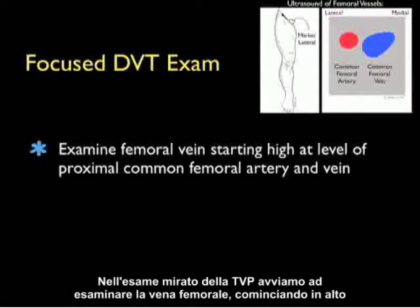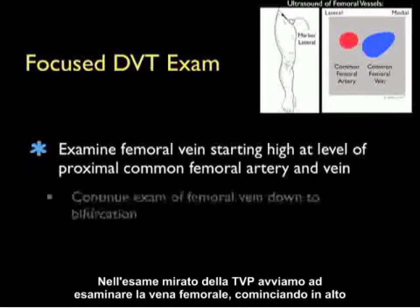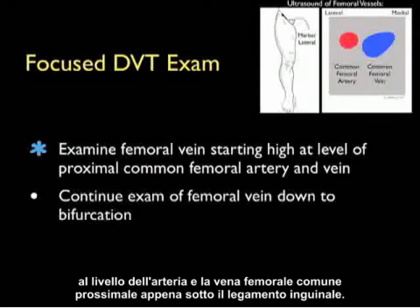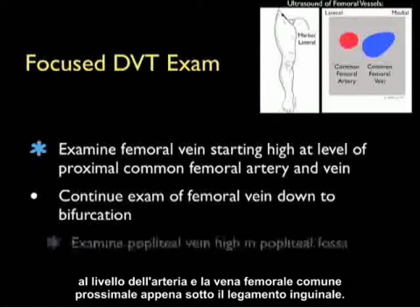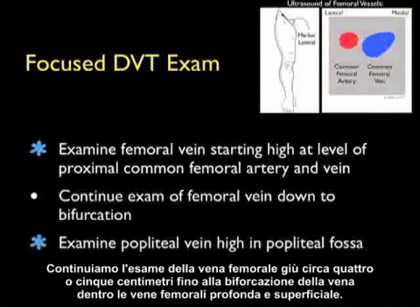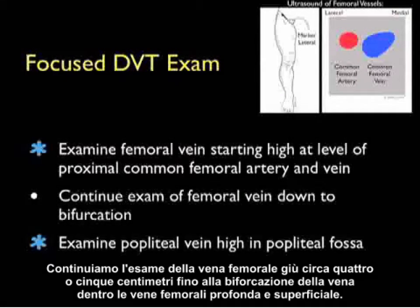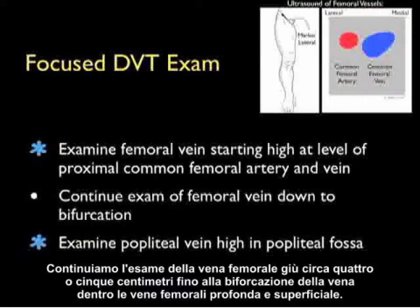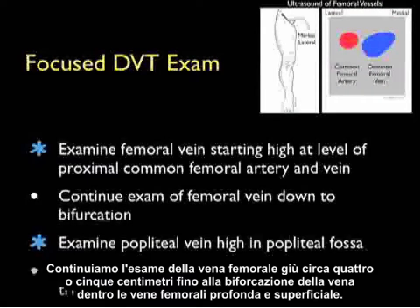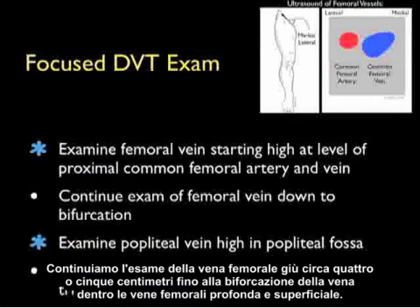In the focused DVT exam, we'll begin by examining the femoral vein starting high at the level of the proximal common femoral artery and vein just below the inguinal ligament. We'll continue the exam of the femoral vein down about four to five centimeters through to bifurcation of the vein into the deep and superficial femoral veins.